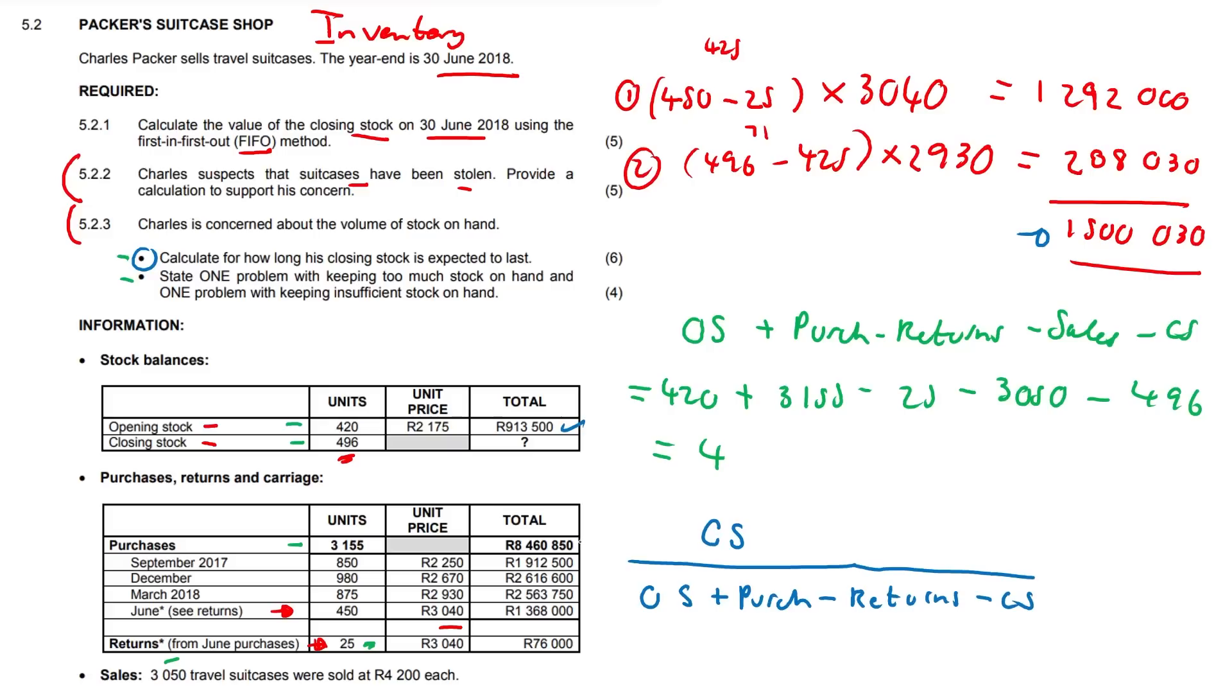Now you can use the rand values, like you can use these big rand values if you like. Alternatively, you can use the corresponding unit prices, whatever suits your fancy. And whatever we get, we multiply by 365, or we multiply by 12. If we want to calculate that value in months, we multiply by 365 to get the value in days.